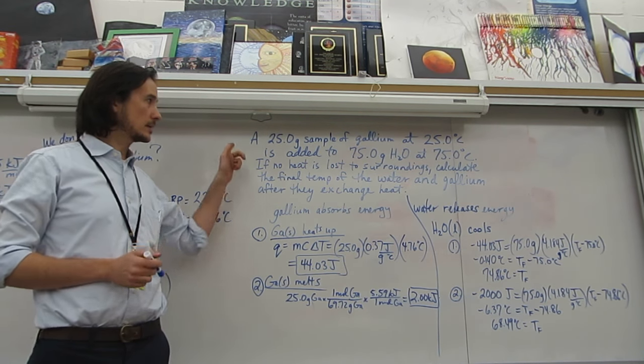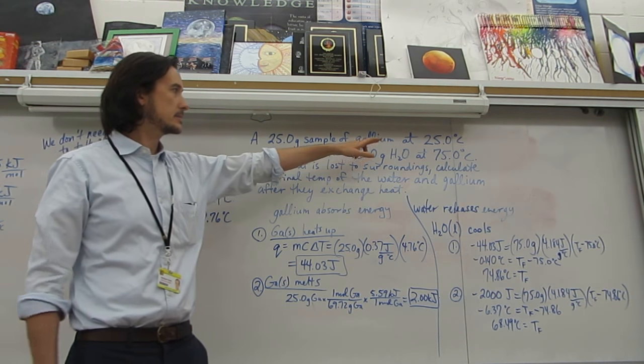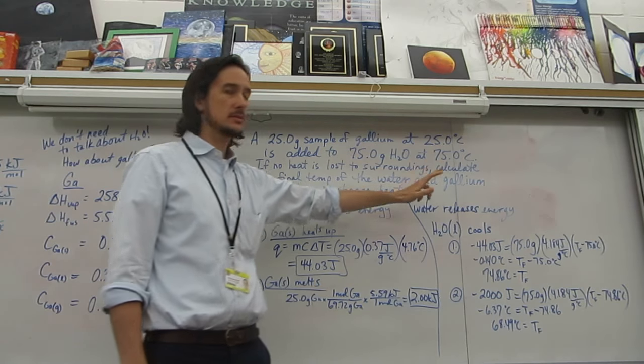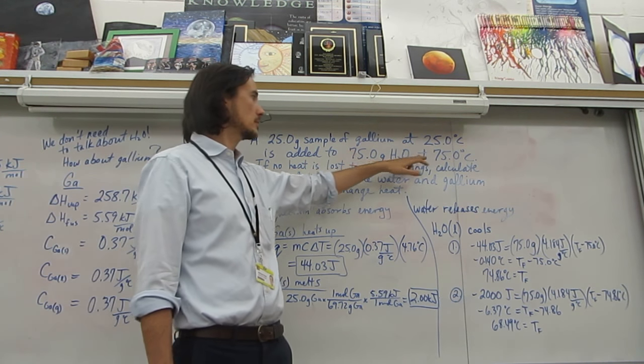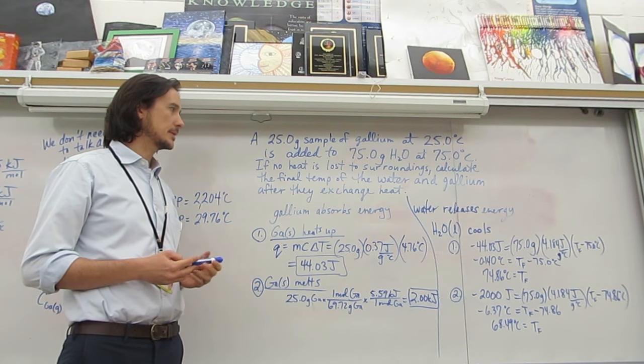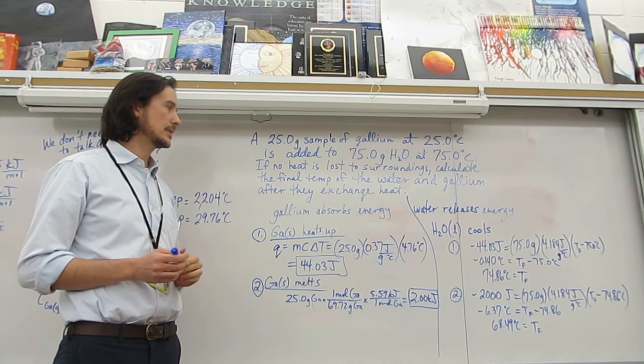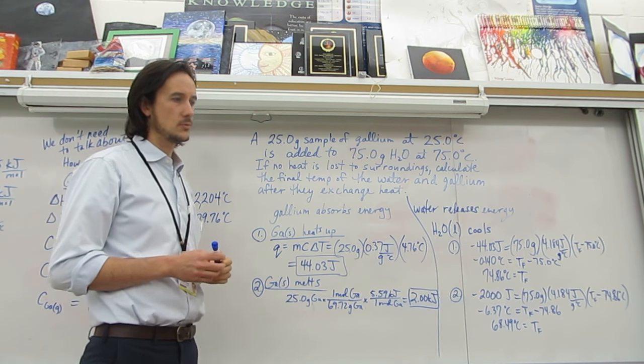Here's a question. We've got a 25 gram sample of gallium at 25 degrees Celsius. It is added to 75 grams of water at 75 degrees Celsius. If no heat is lost to the surroundings, calculate the final temperature of the water and gallium after they exchange heat.